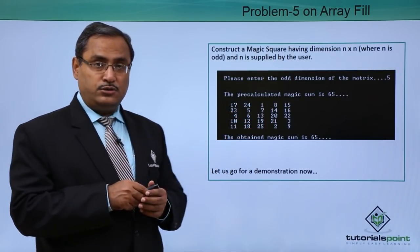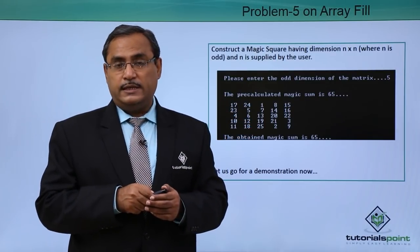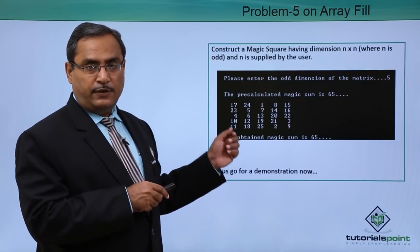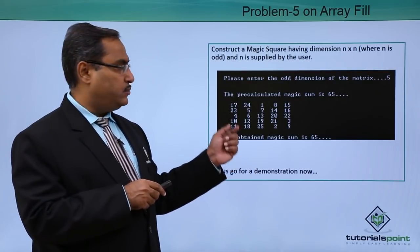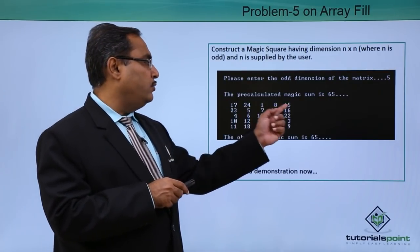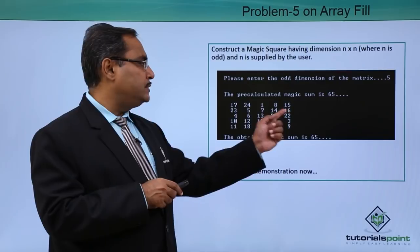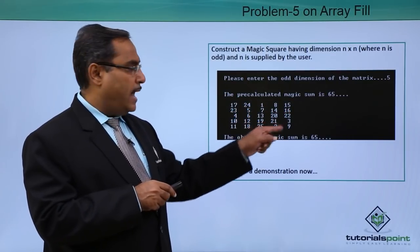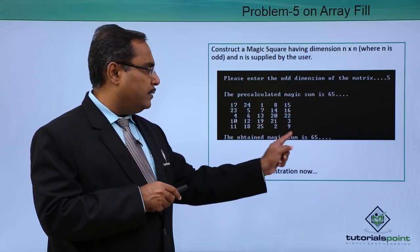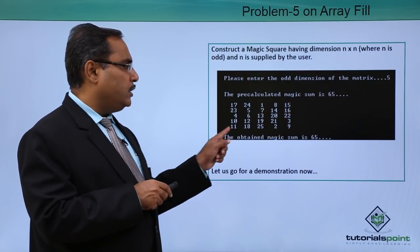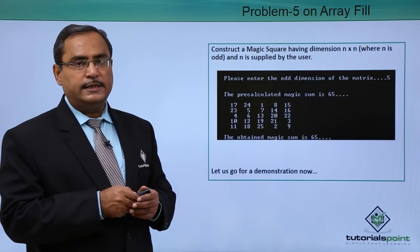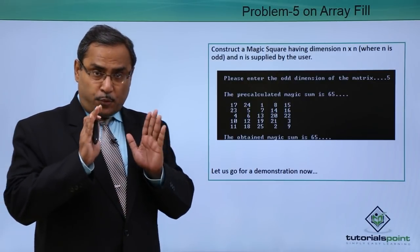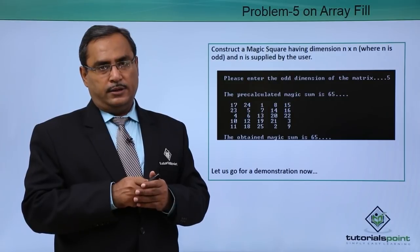It is a very complicated logic to fill up this magic square. When you fill up this magic square, all the row-wise sums, all the column-wise sums, and diagonal sums are equal to each other — and here it is 65. This is the problem of the magic square.